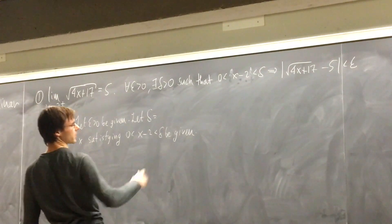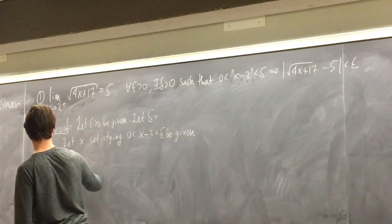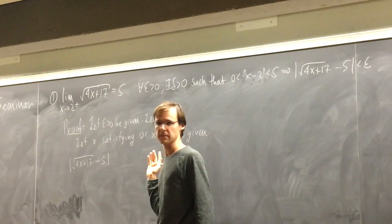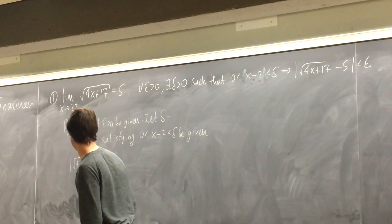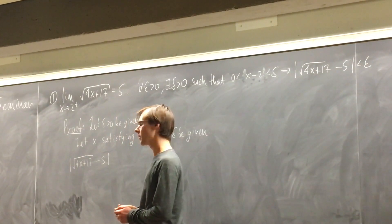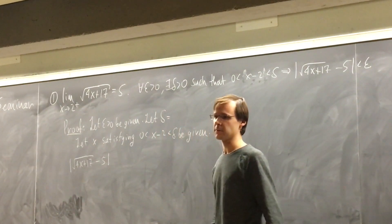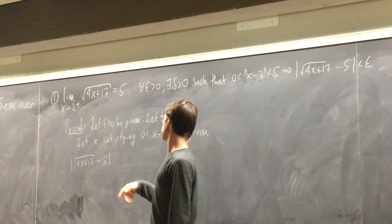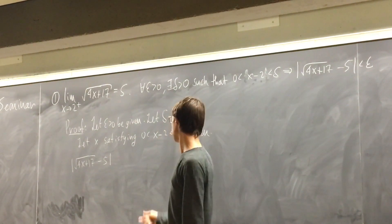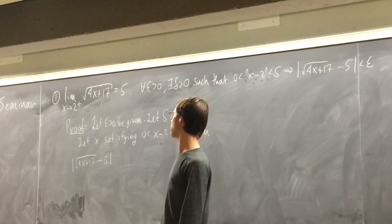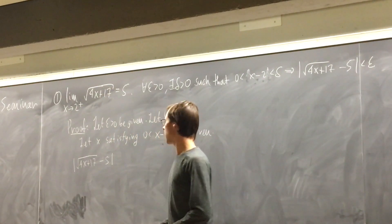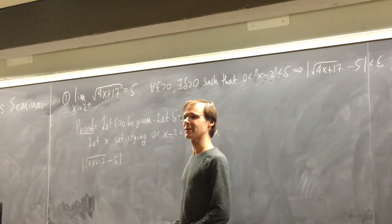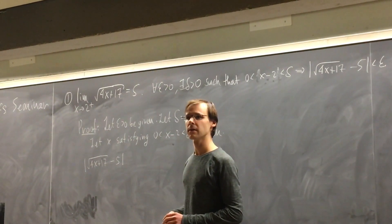Let's begin with abs(root(4x + 17) minus 5) and show this is less than epsilon. Step one in these limit proofs is always to do some algebra. We want to take this expression — this f(x) minus L — mess around with it, and make it look like an expression involving our given information. We know something about x minus 2: it's between zero and delta. Whenever you have a square root, what's the first thing you might do?